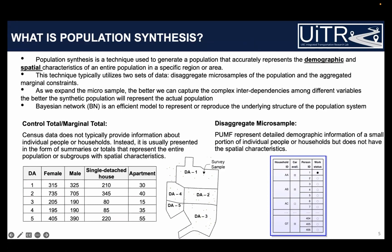The data that is typically available comes in two types. First, there is control total or marginal total data from the census, which publishes socio-demographic attributes at a very aggregate level. The city is divided into many zones and for each zone we have aggregate-level social demographic information. Second, there is disaggregate micro-sample data — this can be a travel survey, or census publishes a proportion of the data as a micro data file, known as the Public Use Microdata File, or PUMF.